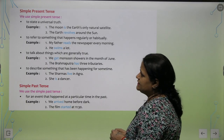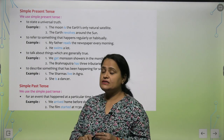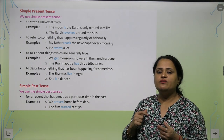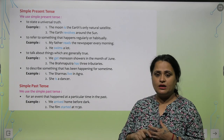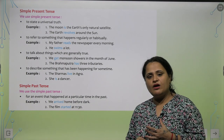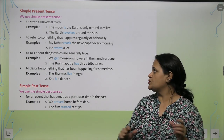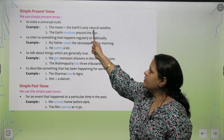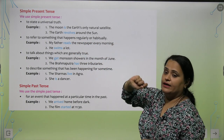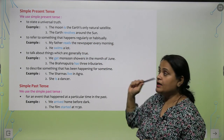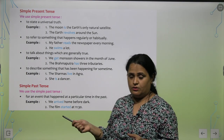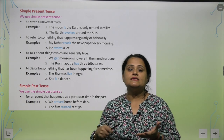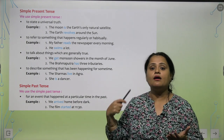Simple present tense. Simple present tense kab use karte hai? Jab hum kishi universal truth ko batate hai, tab hum waha par bilkul simple tense use karte hai. Jaise, 'The moon is the earth's only natural satellite.' Yeh ek universal truth hai — yeh badal nahi sakta. 'The sun rises in the east.'